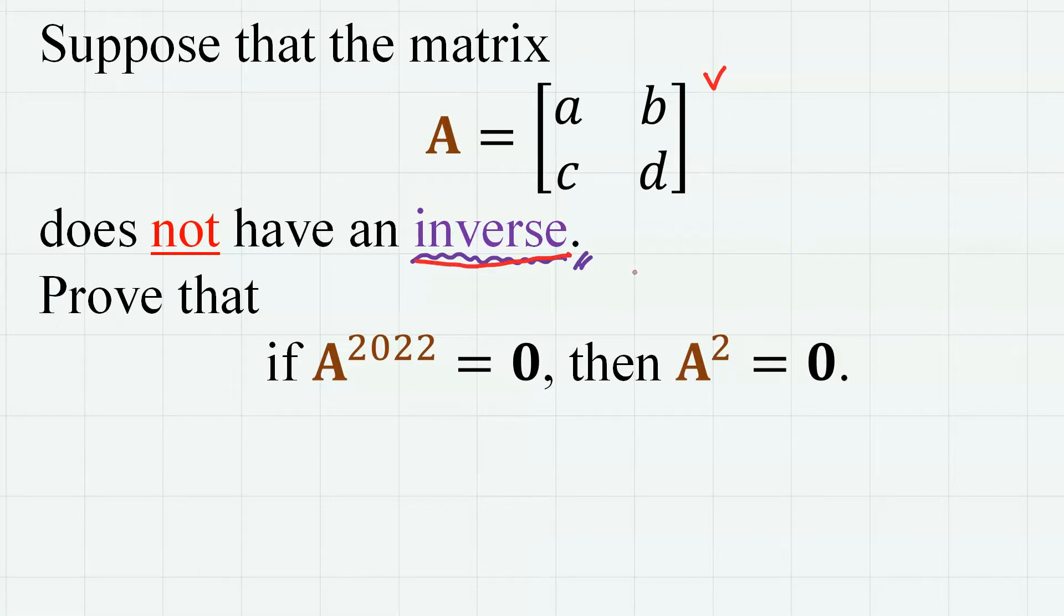With that condition, prove that if A to the power of 2022 equals 0, then A squared also equals 0. Here this 0 is actually a 0 matrix, where every entry of the matrix is 0.